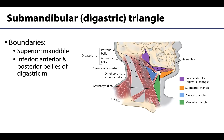Recall that the other name for this triangle is the digastric triangle, and this is because both the anterior and the posterior digastric muscles form the inferior boundaries of this triangle, with the mandible forming the superior boundaries. You can see this general space in purple is going to be the triangular space for the submandibular.